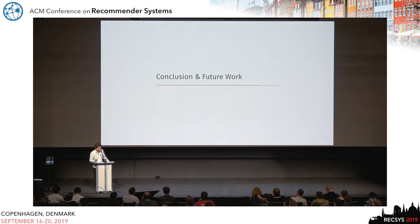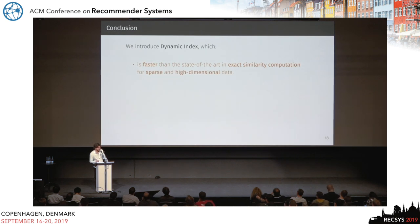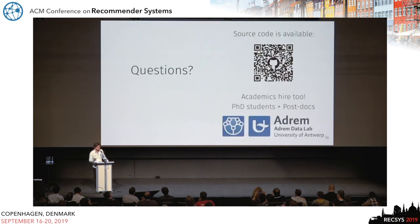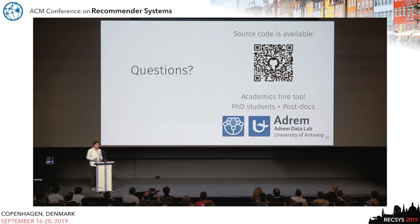To conclude, we introduce Dynamic Index, which is a fast way to compute exact similarities between sparse high-dimensional vectors. It's very easy to use in an online manner, very easy to do in parallel, and can naturally handle and exploit the recommendability of items. The source code is available online, we are also hiring, and I would be happy to take some questions.